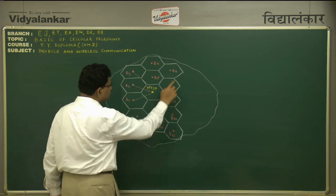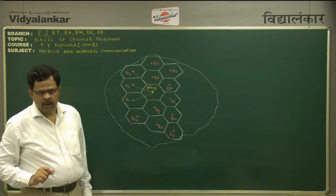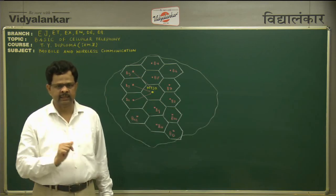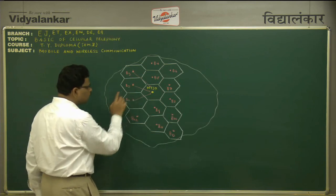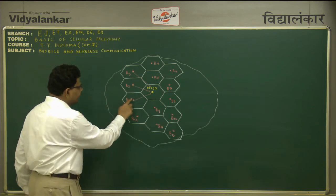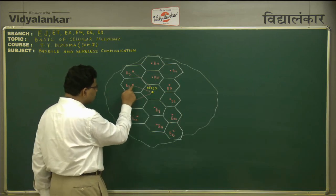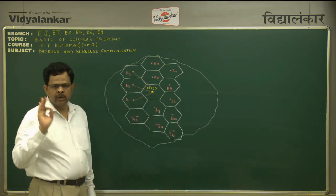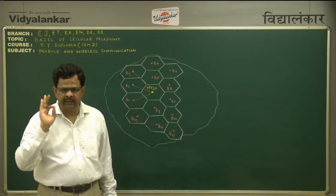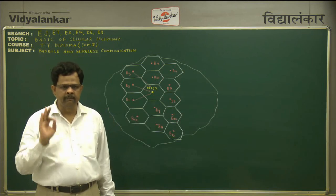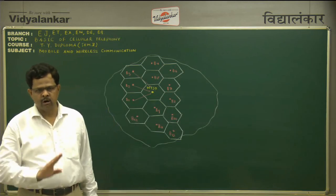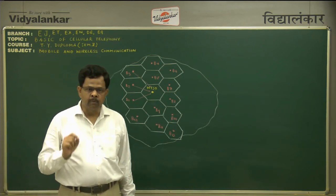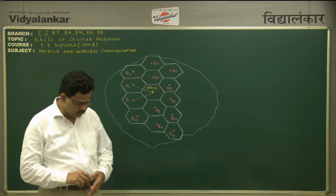Each and every base station can directly communicate with the MTSO. But no two base stations can directly communicate with each other. B1 and B2 cannot communicate with each other directly. If B1 wants to communicate with B2, then the communication link takes place via MTSO. So any two base stations can communicate with each other only using the MTSO.